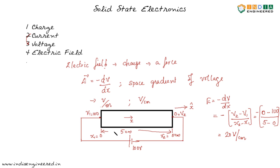So we can say that an electric field of 20 volt per centimeter exists along this direction. We have seen how to calculate the electric field if you have potential at different points, assuming the material to be uniform.